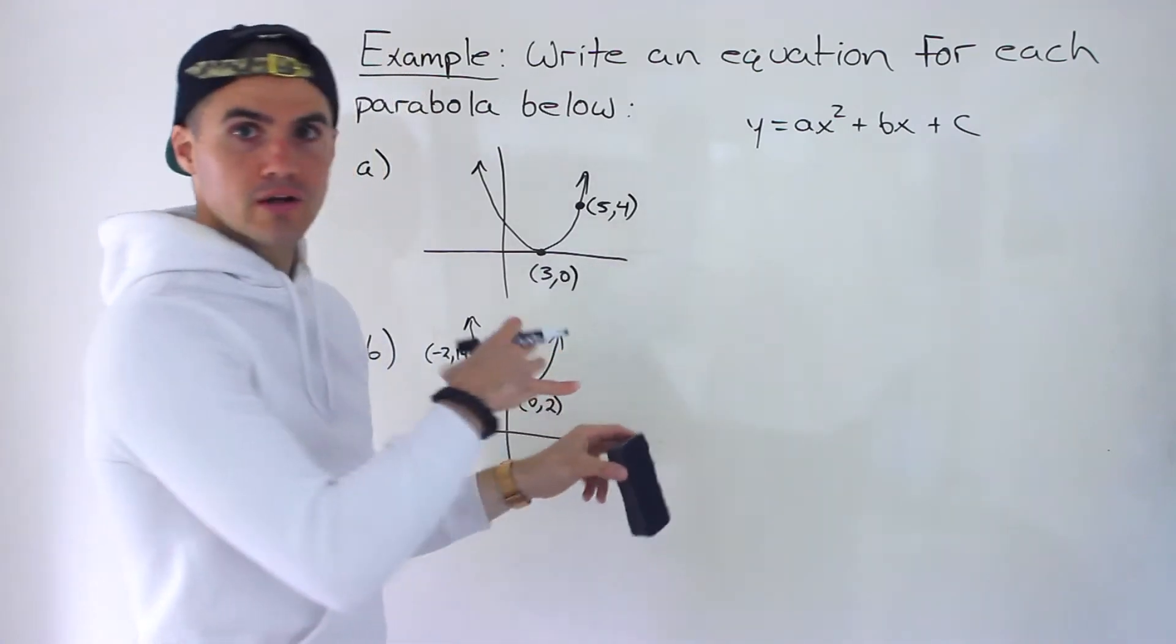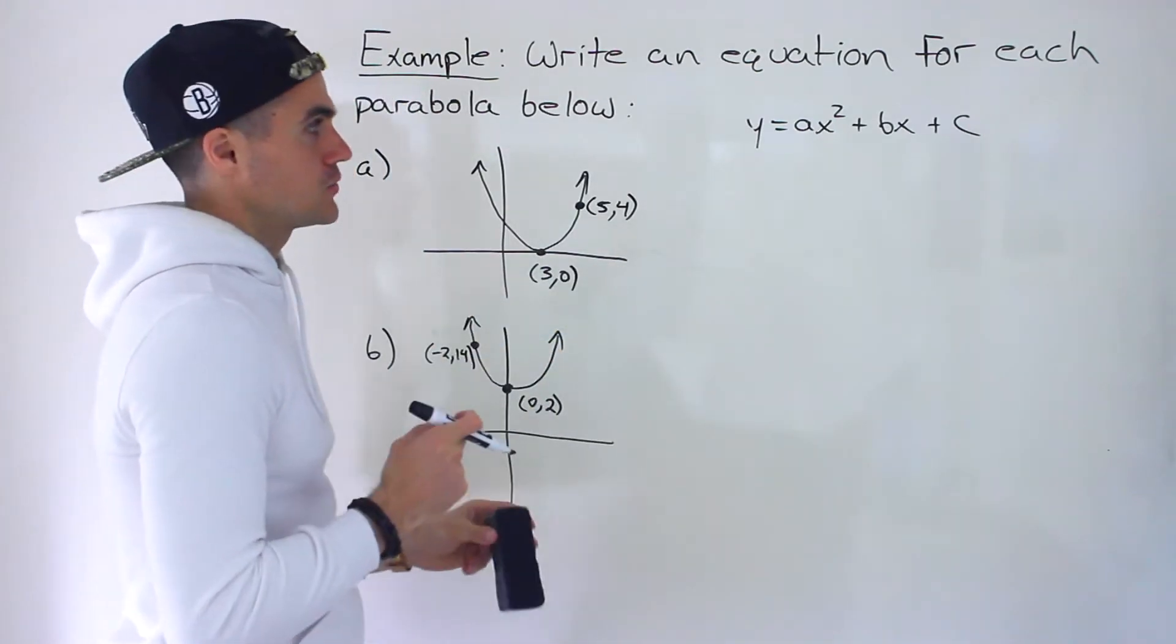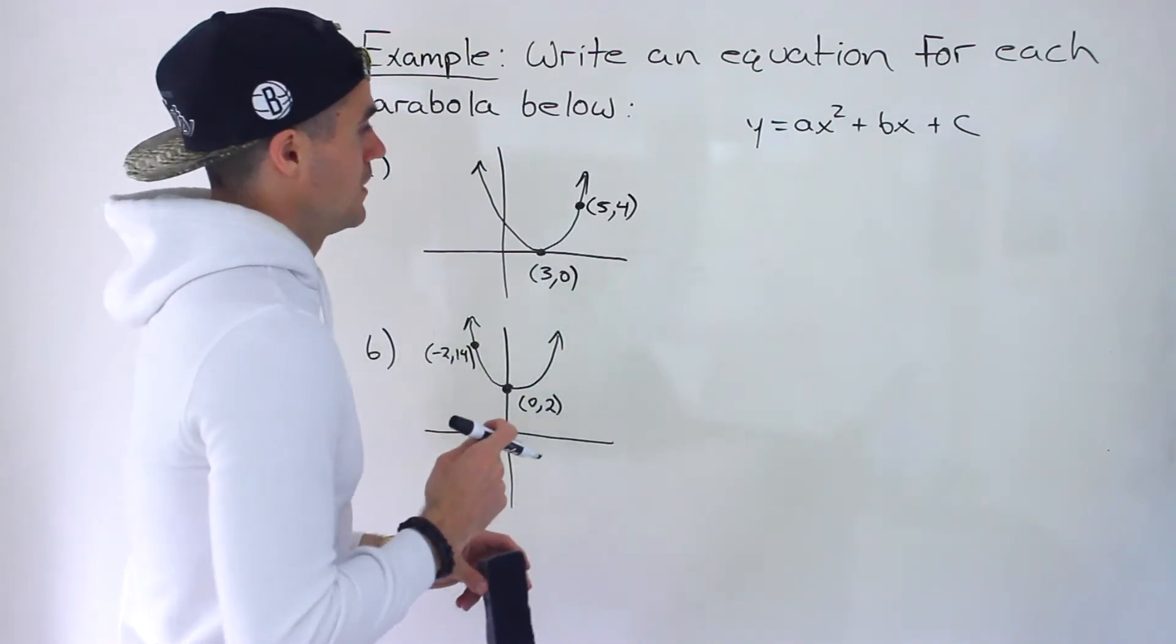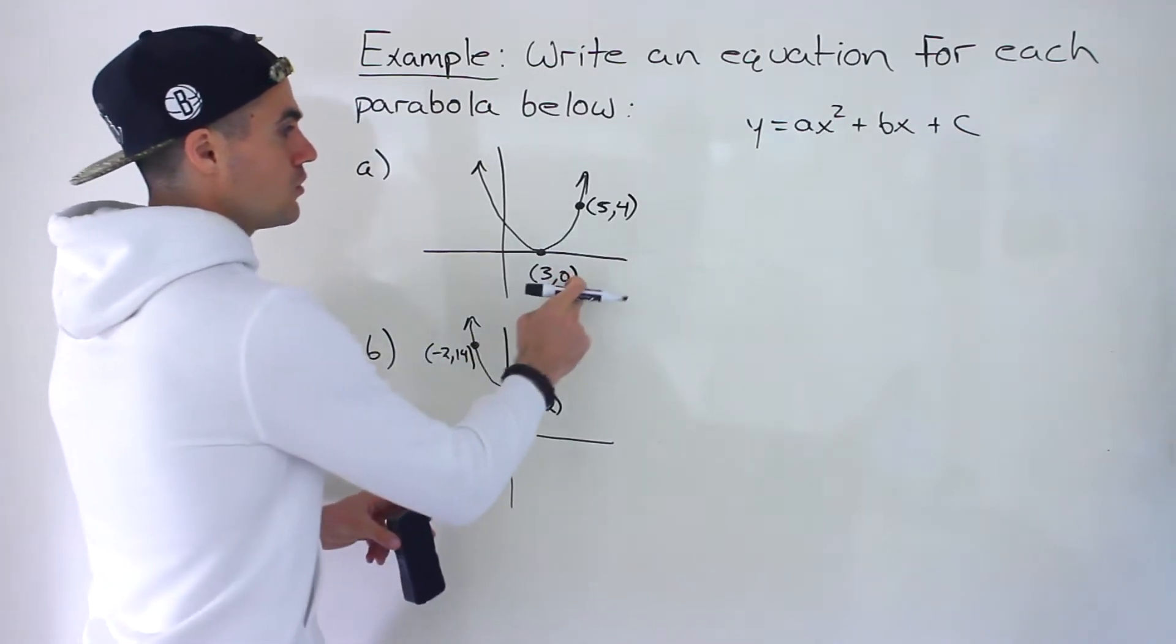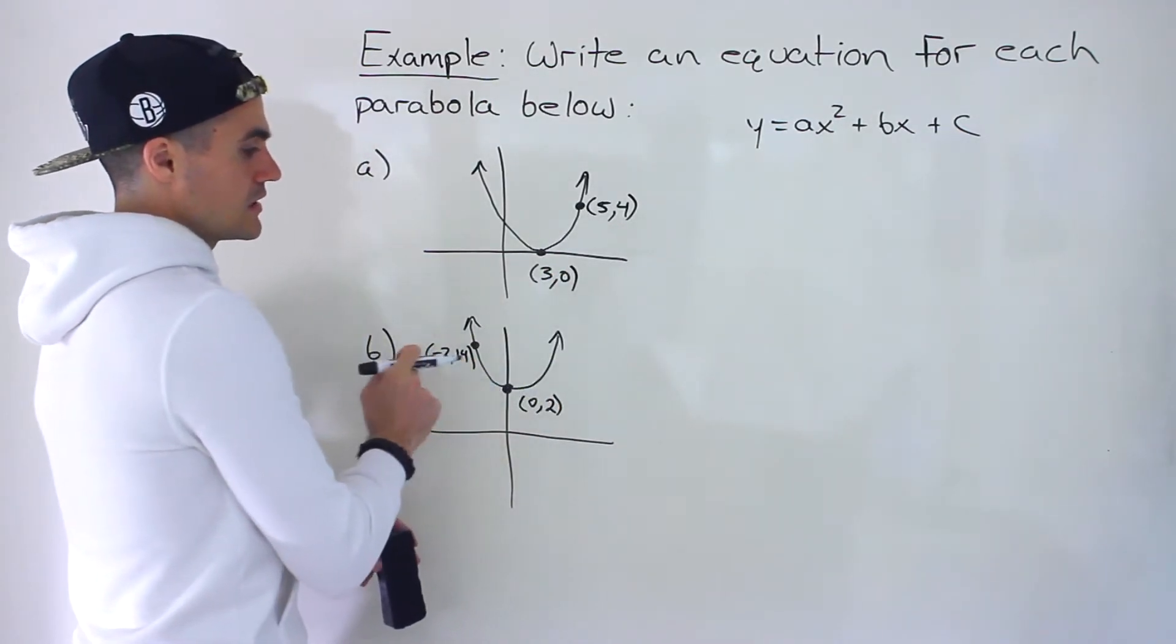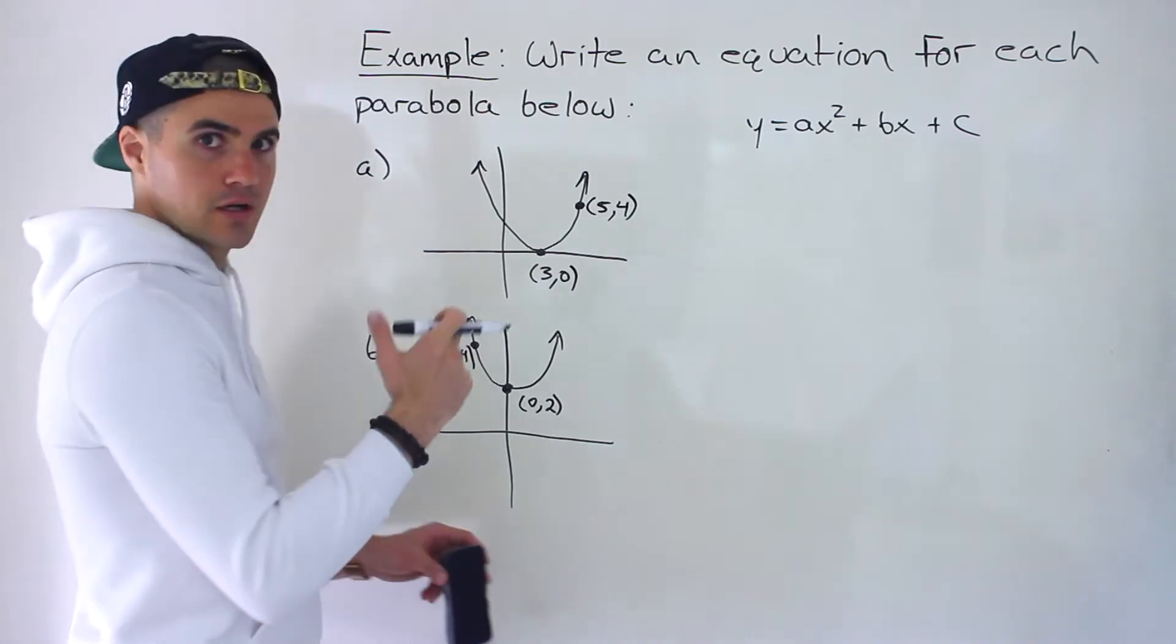So we needed three points and then we did substitution elimination. We did a couple of examples like that. Well, notice in this case, what's happening is we're only given two points in each of these. So how are we going to do that now?